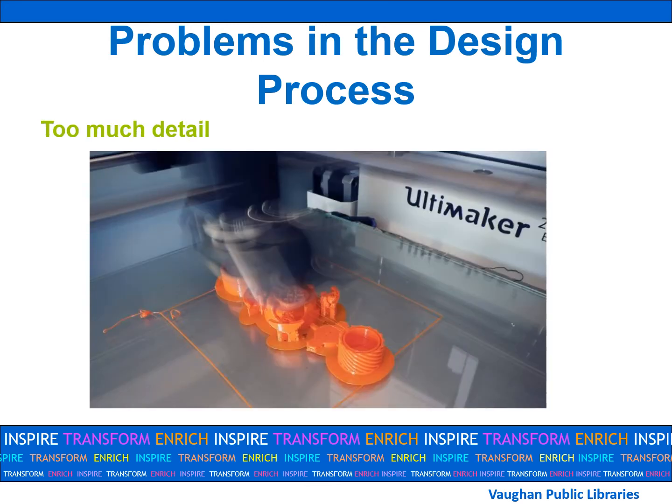Fine details are difficult and up to the capabilities of the printer. Not all details will appear as they do in their digital file, but you will only be able to see this after your item is printed. You can correct this by adjusting settings in the library's slicer software. When you are preparing your item, you may alter the speed of the print with staff permission.